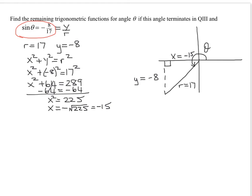So let's find its reciprocal first. Remember, the cosecant of theta is 1 over the sine of theta, which is 1 over negative 8 over 17. And how do you find that? You take the reciprocal of this. So it's going to be negative 17 eighths. So that is equal to the cosecant of theta.